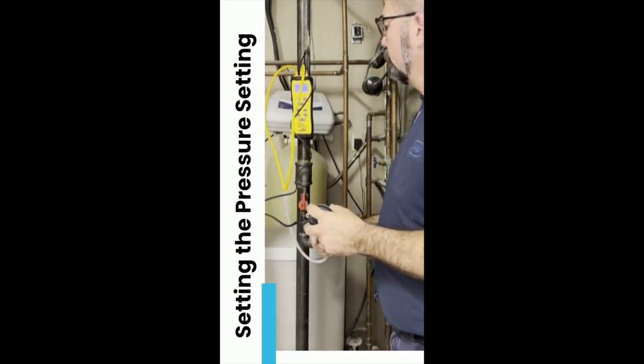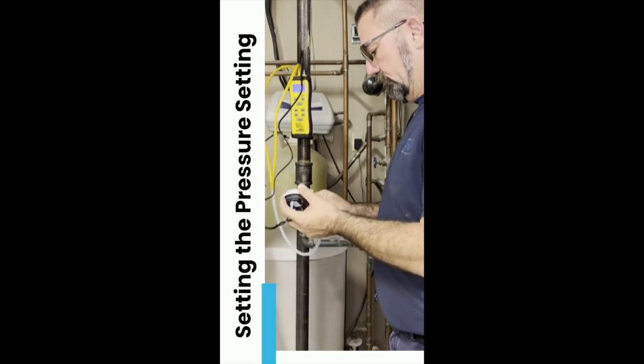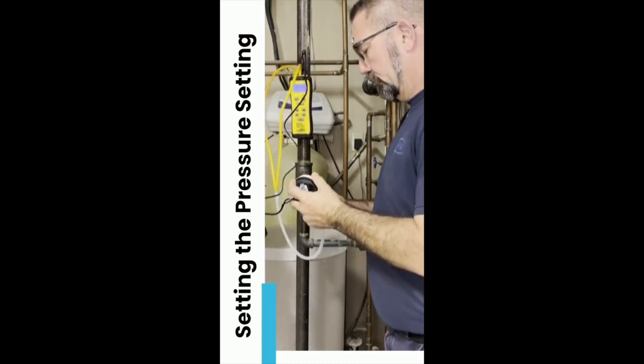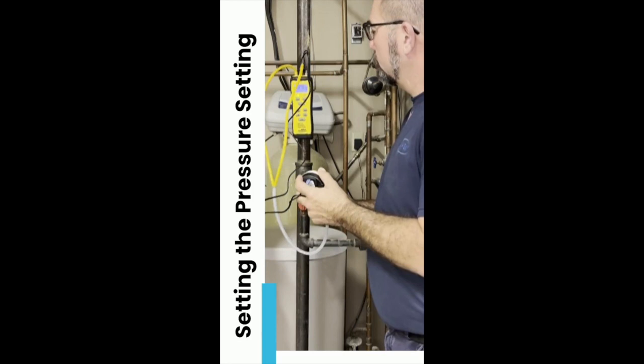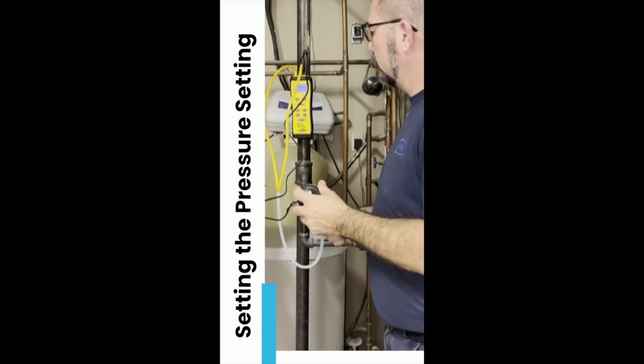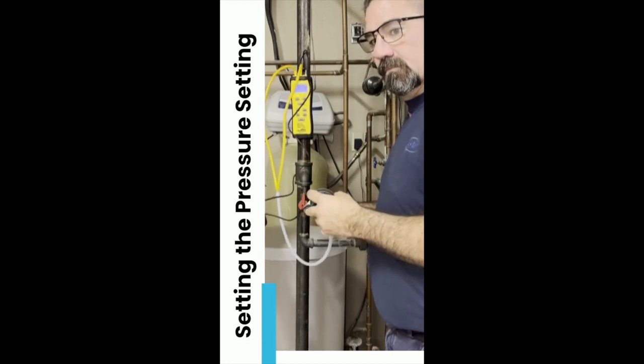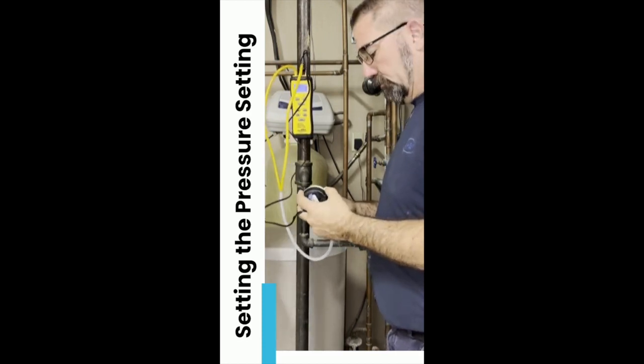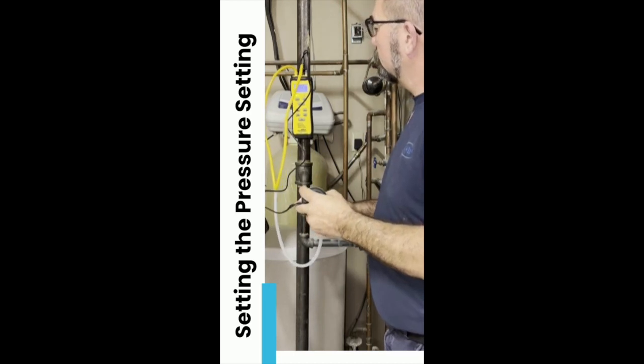Go ahead and connect that to the gray port, which is the negative side of the universal pressure switch. We can set it for whatever we like, anywhere from one-tenth of an inch to three-tenths of an inch. We're going to set it to what we need it to be for the application.